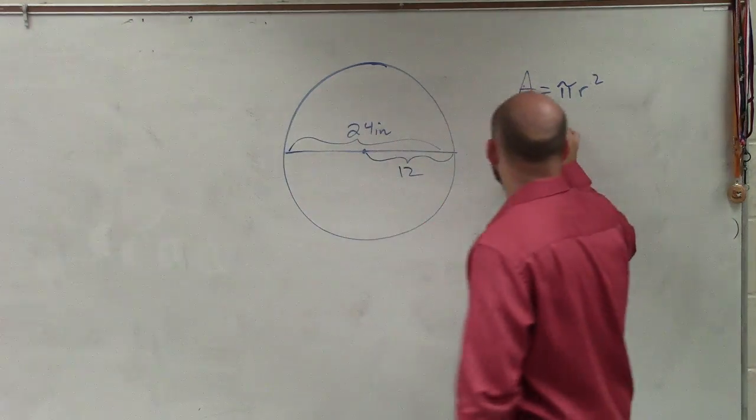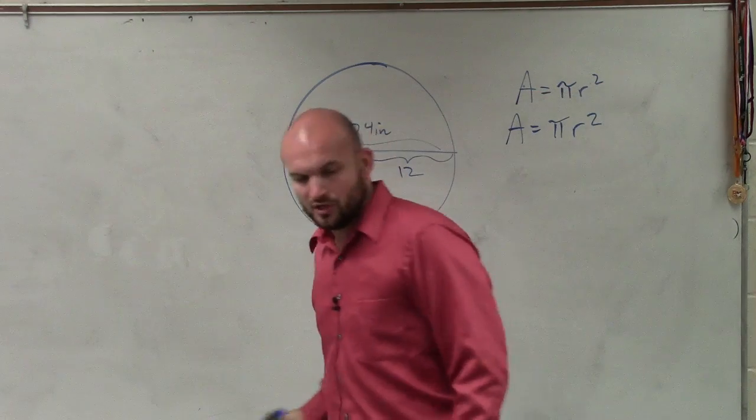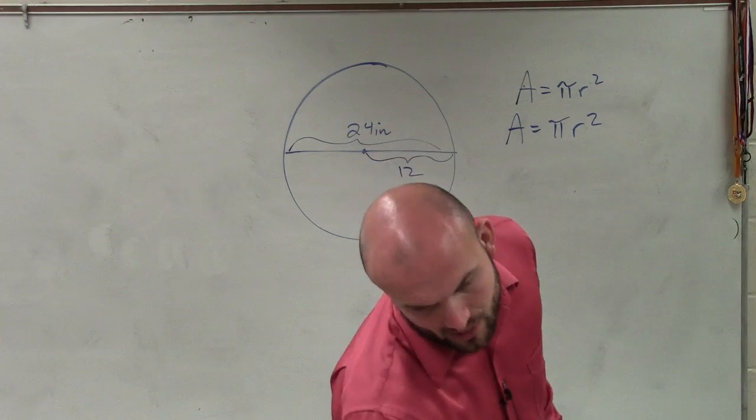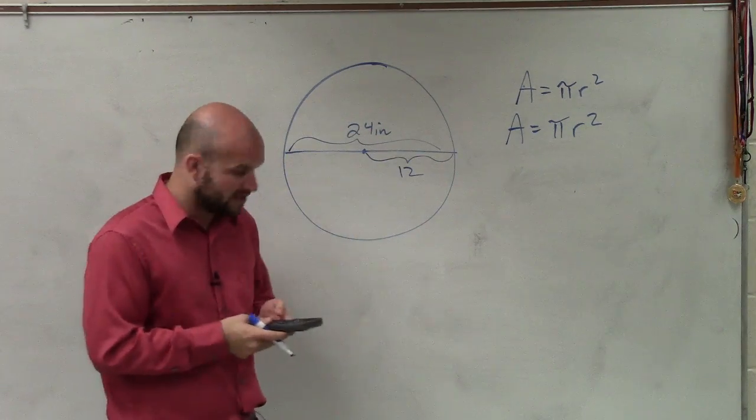So the area of this circle equals pi times r squared. Now, it is important to look at this and say, what do they want us to round? They want us to round to the nearest tenth. Do not round until the very, very end.